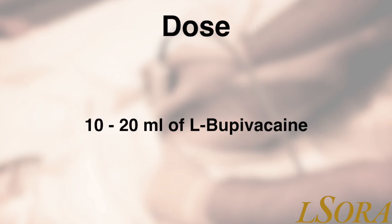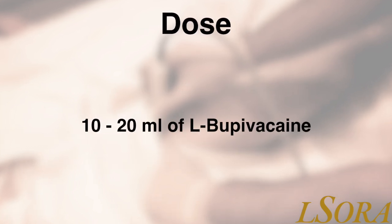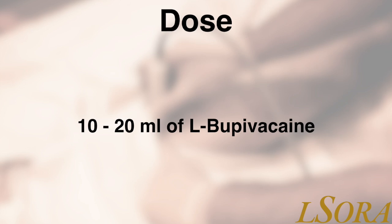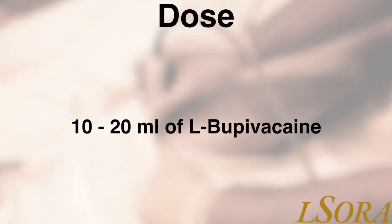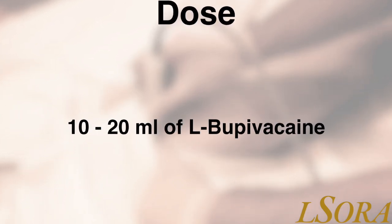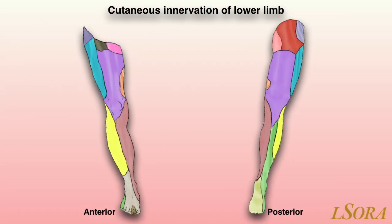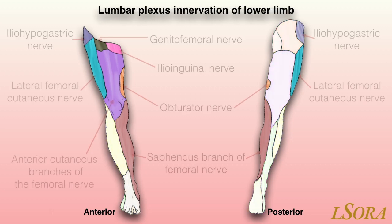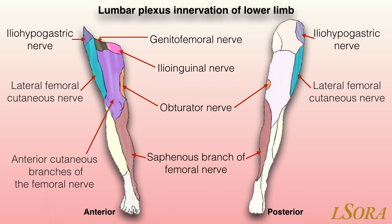The dose of local anaesthetic required really depends upon the clinical situation, but generally between 10 to 20 mils of a long-acting local anaesthetic like levobupivacaine should suffice. In this schematic overview we show you the cutaneous innervation of the whole lower limb. We will now focus on the lumbar plexus innervation of the lower limb, with the iliohypogastric and ilioinguinal nerves, the genitofemoral nerve innervation, the femoral nerve and lateral femoral cutaneous nerve, obturator and saphenous.